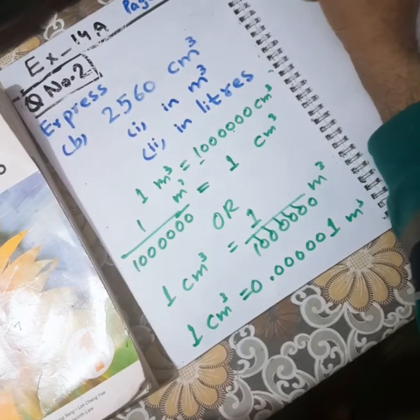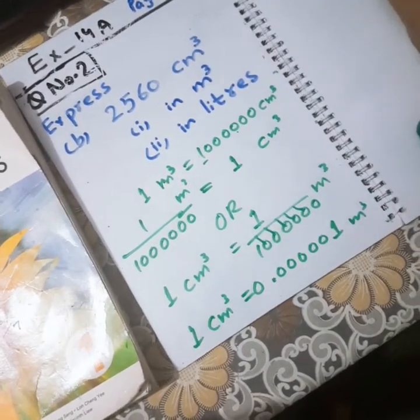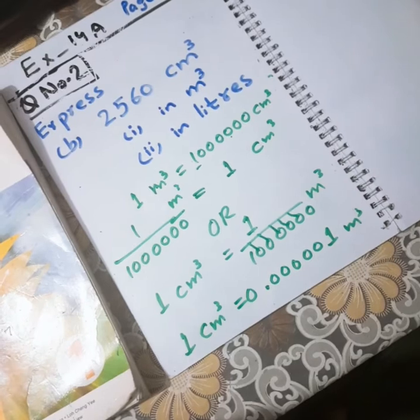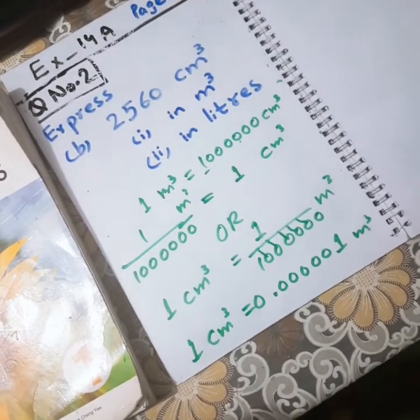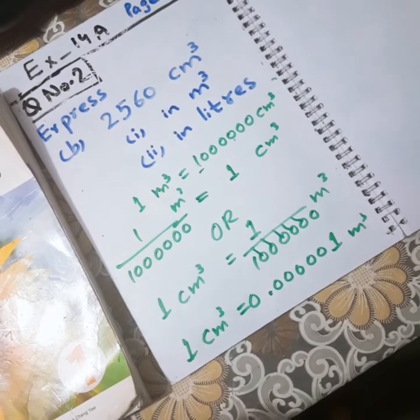So we have derived that 1 cm³ is equal to 0.000001 m³.